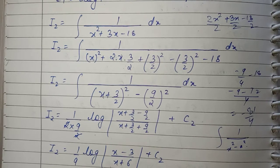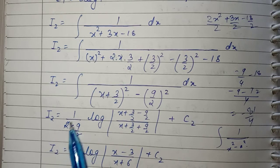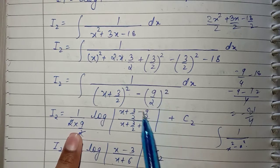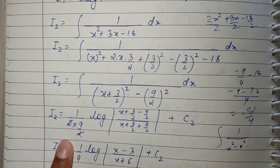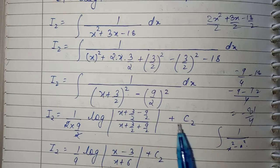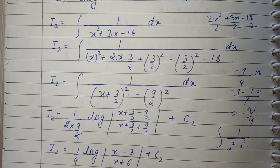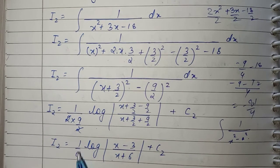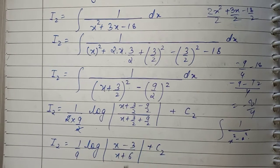The integration formula for 1/(x²−a²) is (1/2a)·log|(x−a)/(x+a)|. Applying this, I2 = (1/2)·(1/(9/2))·log|(x − a)/(x + a)| + C2. The twos cancel, giving (1/9)·log|(x−3)/(x+6)| + C2.